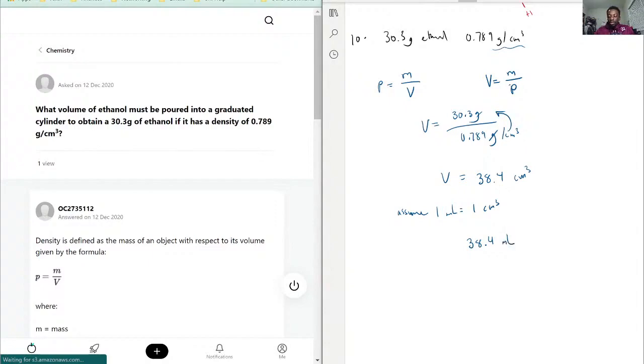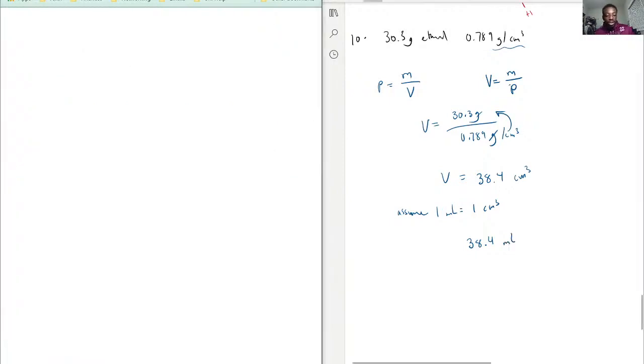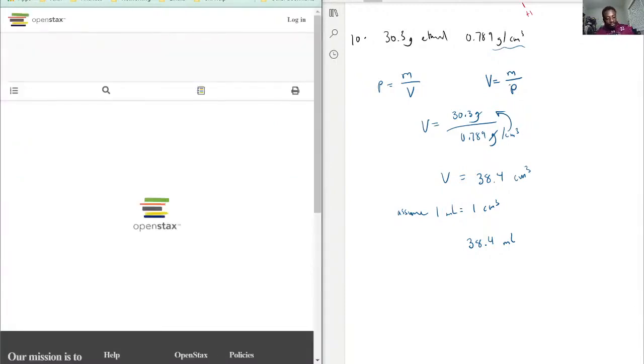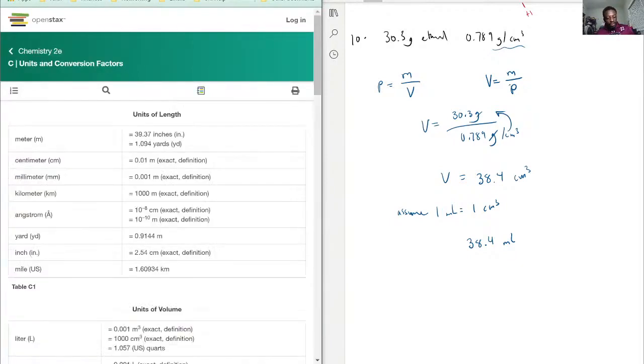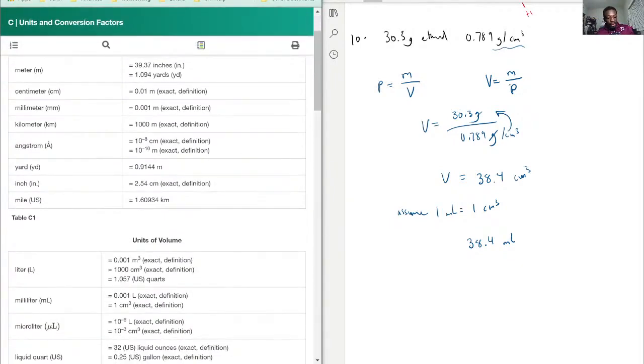One milliliter is equal to one centimeter cubed. Let's see our units of conversion to double check. One liter is equal to 0.01 liters or 1,000 centimeters cubed. So one milliliter is equal to one centimeter cubed. Perfect.